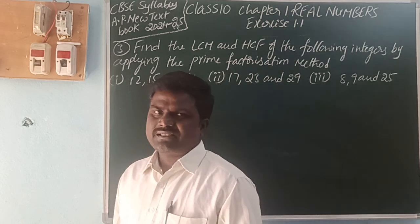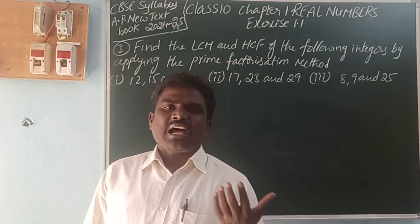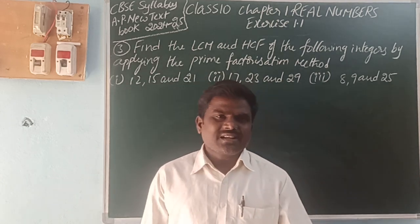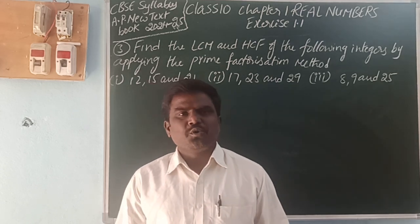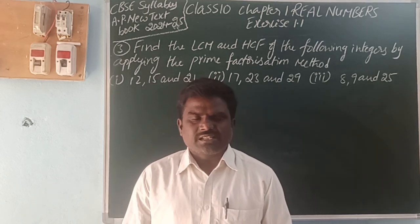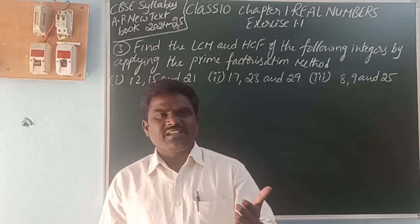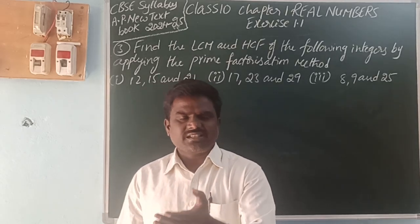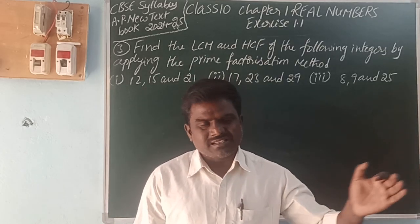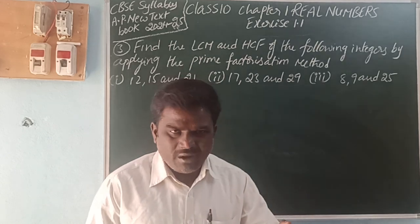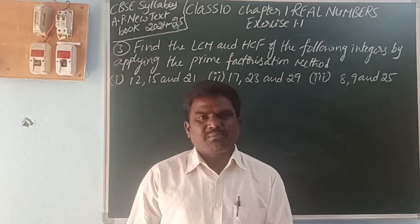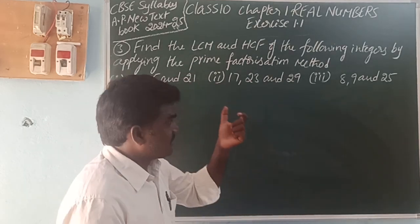What are prime factors? A number whose only factors are prime. What are prime numbers? A number having only two factors: one and itself. Examples: 2, 3, 5, 7, 11, 13, 17, 19, 23, 29, and so on. These all are prime numbers. We divide with prime numbers, and their product is called the prime factorization.